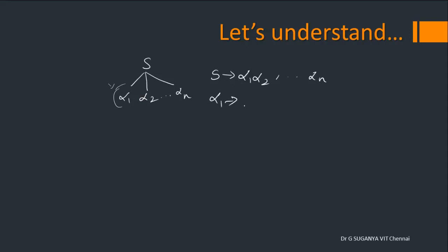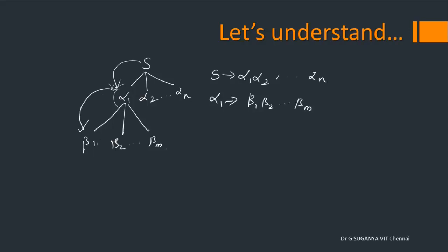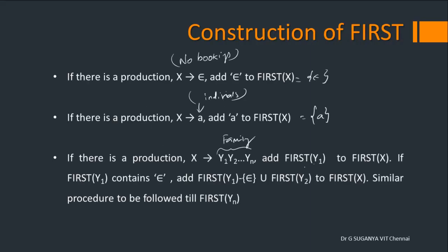If α1 is a non-terminal — say the grandfather brought two of his sons — there is a possibility to expand further using β1 β2 up to βm. So it will get expanded to β1 β2 up to βm. This will go on as long as you have non-terminals in the first position: S gets expanded to α1, α1 gets expanded to β1, and so on.